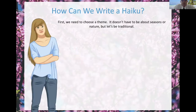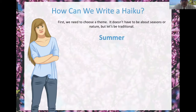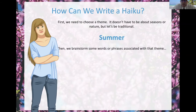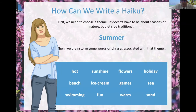So we need to choose a theme. Let's start with something simple — nature or seasons, beautiful around us. Summer. Then brainstorm some words: hot, sunshine, flowers, ice cream, beach, swimming, fun, warm, games, flower, holiday, sea, sand. That's all about summer.